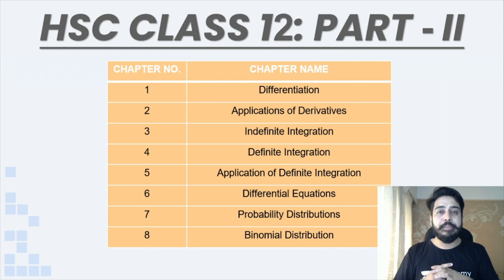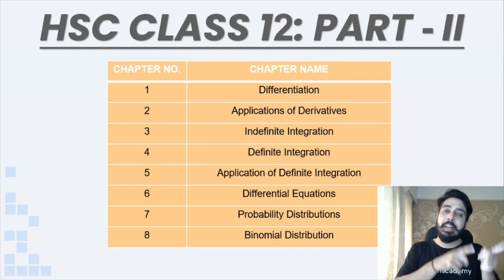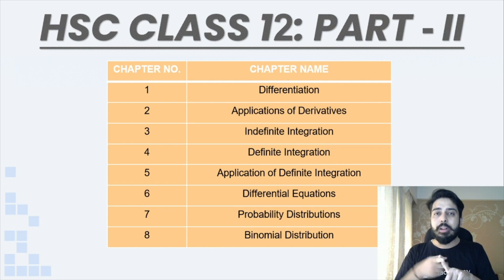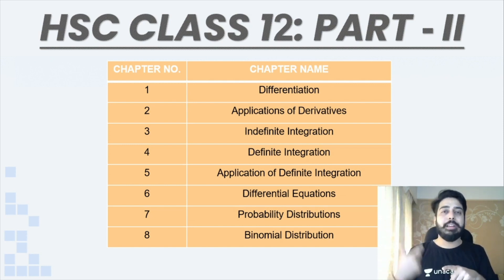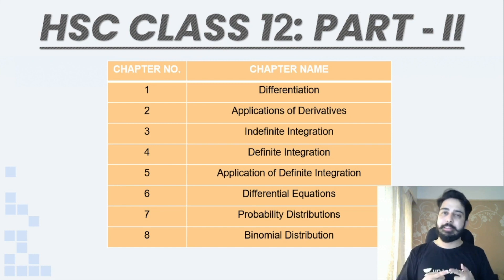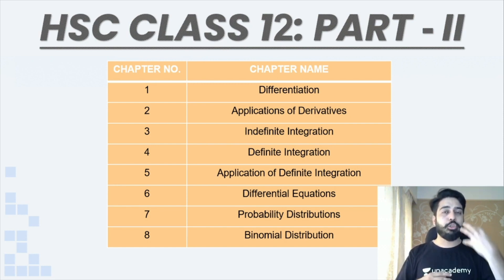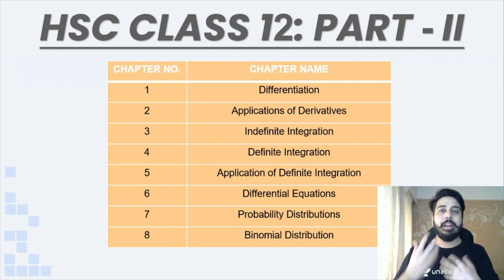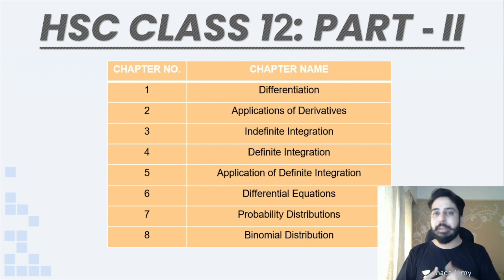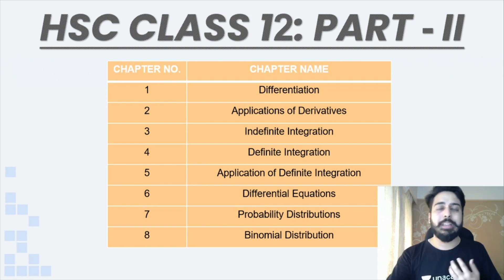For Class 12 Part 2, the first chapter is Differentiation, which is a direct continuation of what you had in HSC Class 11 Part 2 — Limits, Continuity, and Differentiation. All chapters from chapter one to chapter six are interrelated. These are the important chapters you need to know as you move into Class 12, so it is essential to complete Class 11 properly.